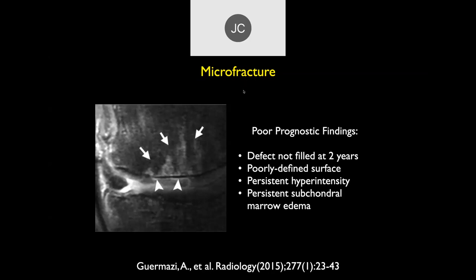Osteochondral grafts really come out to be superior to microfracture in all those studies. Microfracture, especially in athletes, is not done routinely anymore. When following these, you look for the defect to fill. A study by Gramasi in Boston showed they didn't always fill at two-year follow-up — you can get a poorly defined surface, persistent hyperintensity, and persistent subchondral bone marrow edema, which are poor prognostic findings.